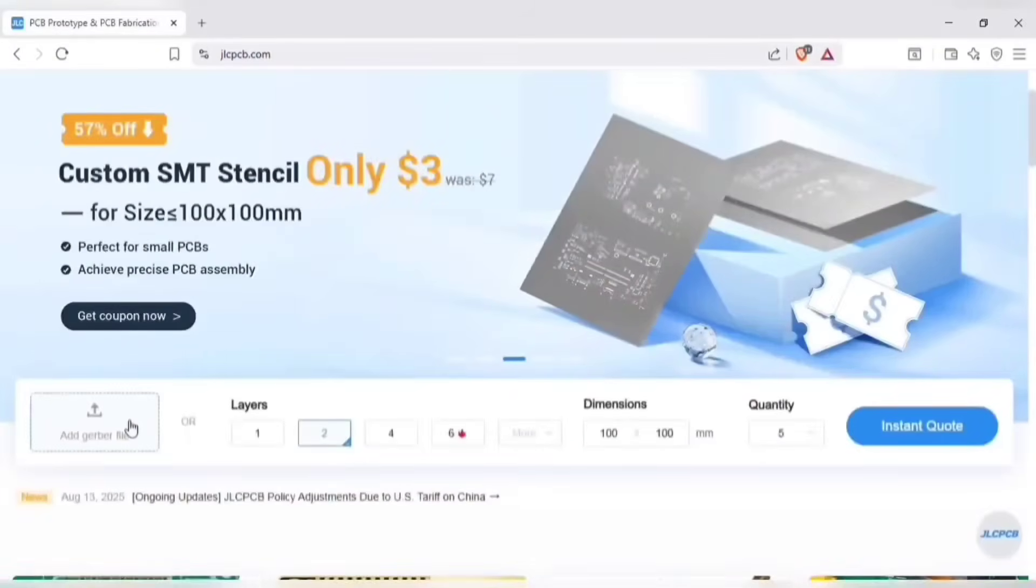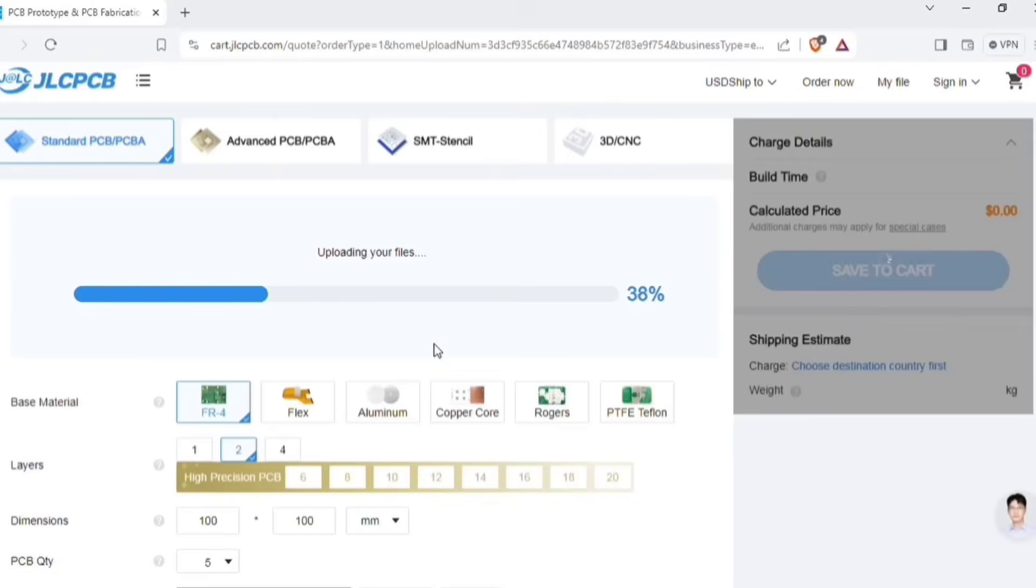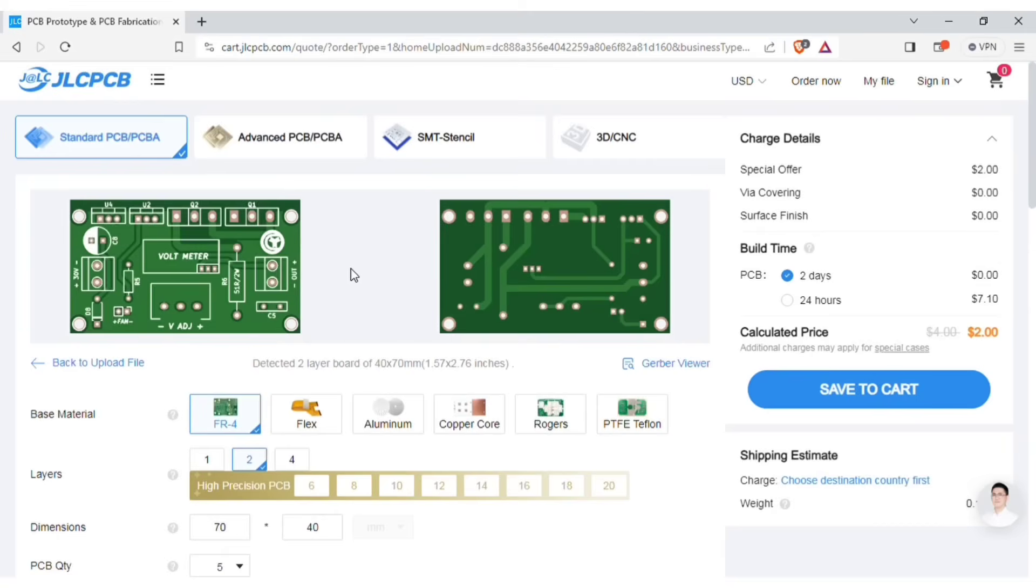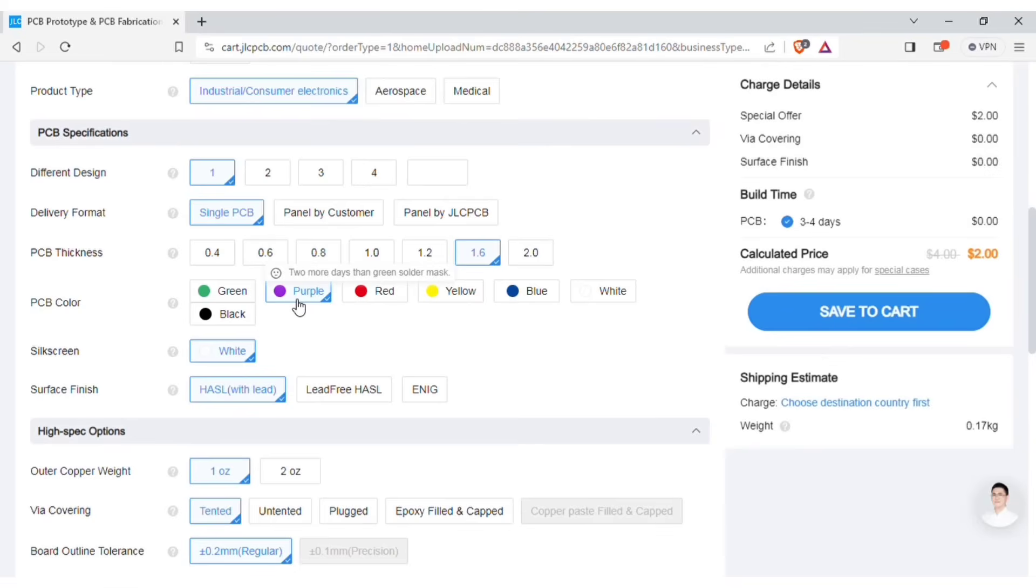Just upload your Gerber file here to get instant quote and order in minutes. It is as easy as online shopping. After uploading you can see the preview of the PCB. You can also change quantity and color of the PCB as per your requirements.